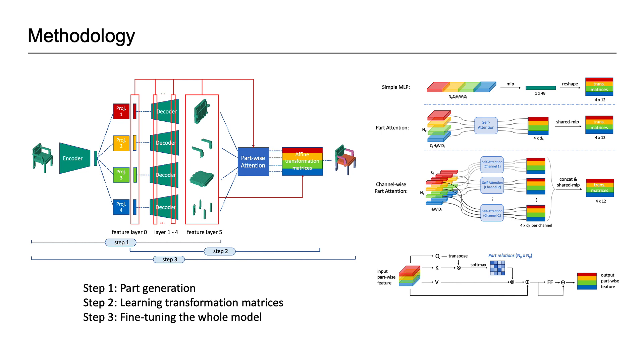To learn better part relations, the part dimension is preserved throughout the training. Features in different network layers are used for multilevel feature fusion, and self-attention layers are used for feature learning across different parts.